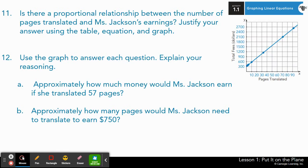Question 11. Is there a proportional relationship between the number of pages translated and Ms. Jackson's earning? Justify your answer using the table, equation, and graph. And 12 says, use the graph to answer each question. Explain your reasoning. Approximately how much money would Ms. Jackson earn if she translated 57 pages? Approximately how many pages would Ms. Jackson need to translate to earn $750?